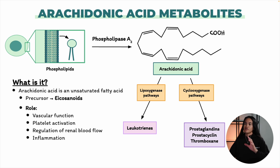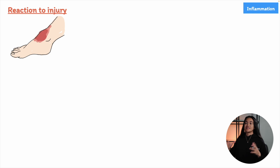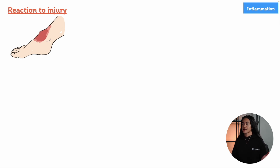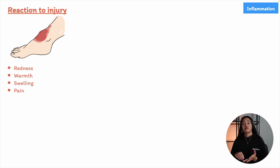Before we dive into the details of arachidonic acid metabolism, let's subtract complexity and take a moment to recap what's involved in inflammation — specifically acute inflammation. Acute inflammation is the body's natural defense response to injury or tissue damage. Think about what happens when you sprain your ankle. This type of inflammation is a protective mechanism that helps the body start the healing process.